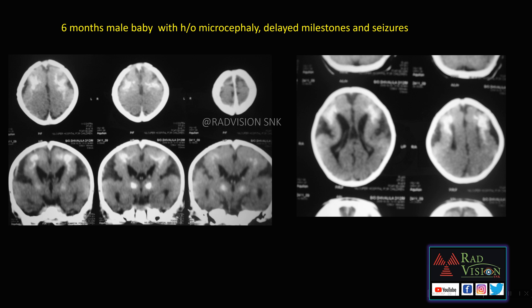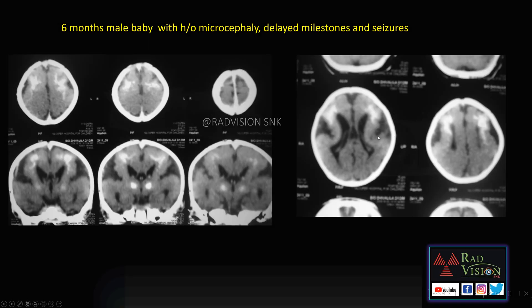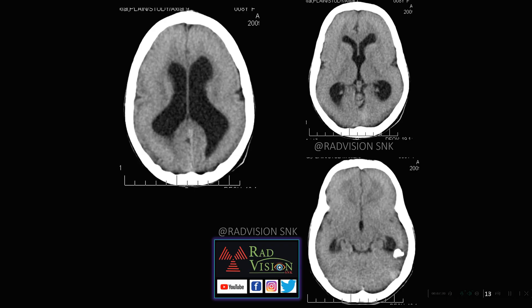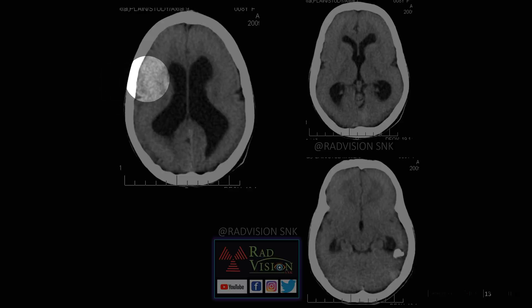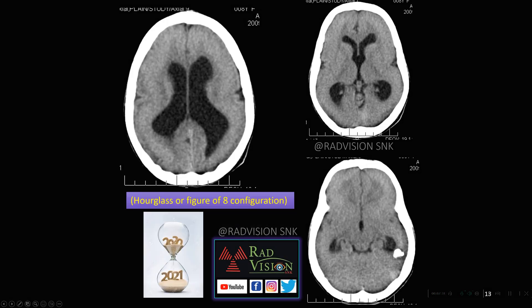Next case: a 6-month-old baby with history of microcephaly, delayed milestones, and seizures. There are periventricular calcifications and basal ganglia calcifications, ventriculomegaly with lissencephaly, and a hourglass-type appearance. This is a classical case of CMV-induced lissencephaly or pachygyria complex, where you have the classical hourglass or figure-of-8 configuration. You can also see pachygyria and lissencephaly with band type of heterotopia and periventricular calcification. So remember CMV-induced lissencephaly/pachygyria complex with hourglass or figure-of-8 configuration.